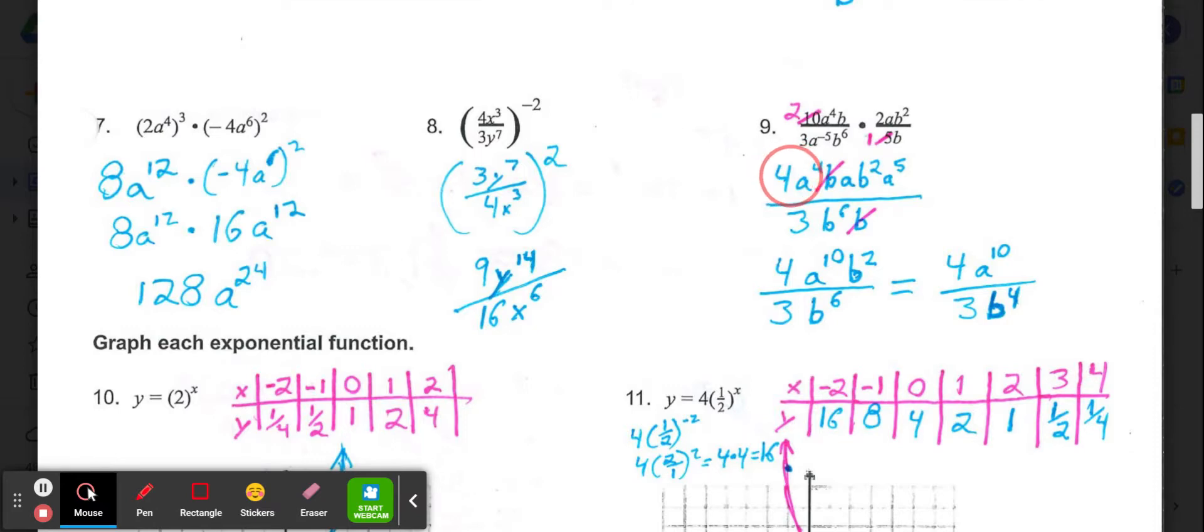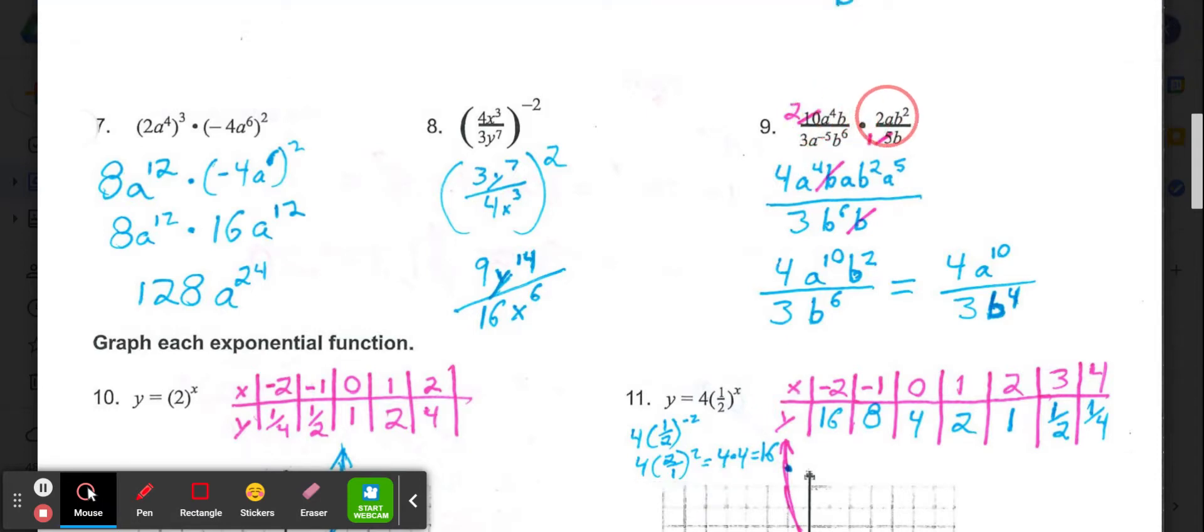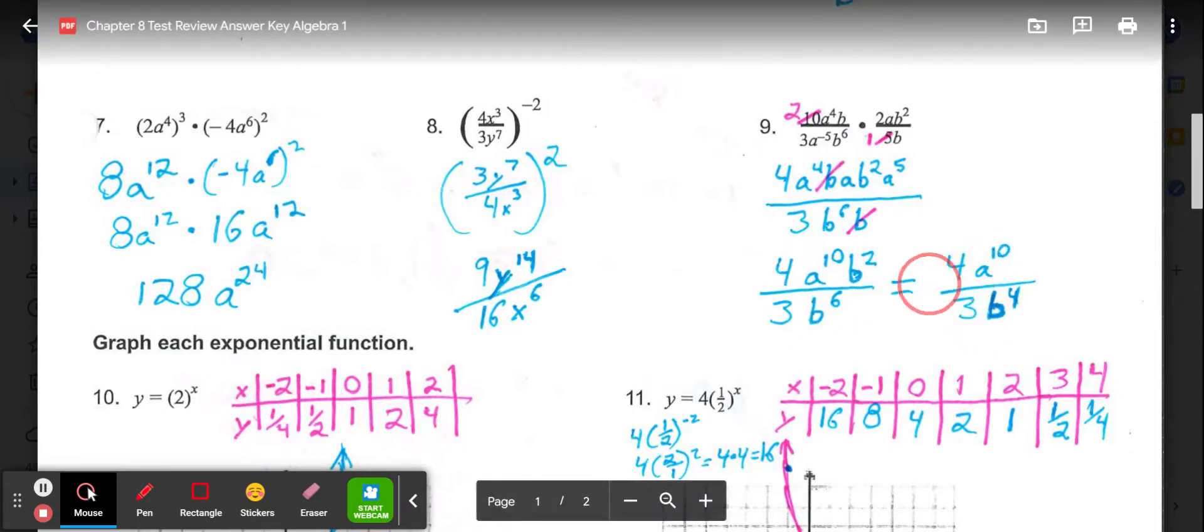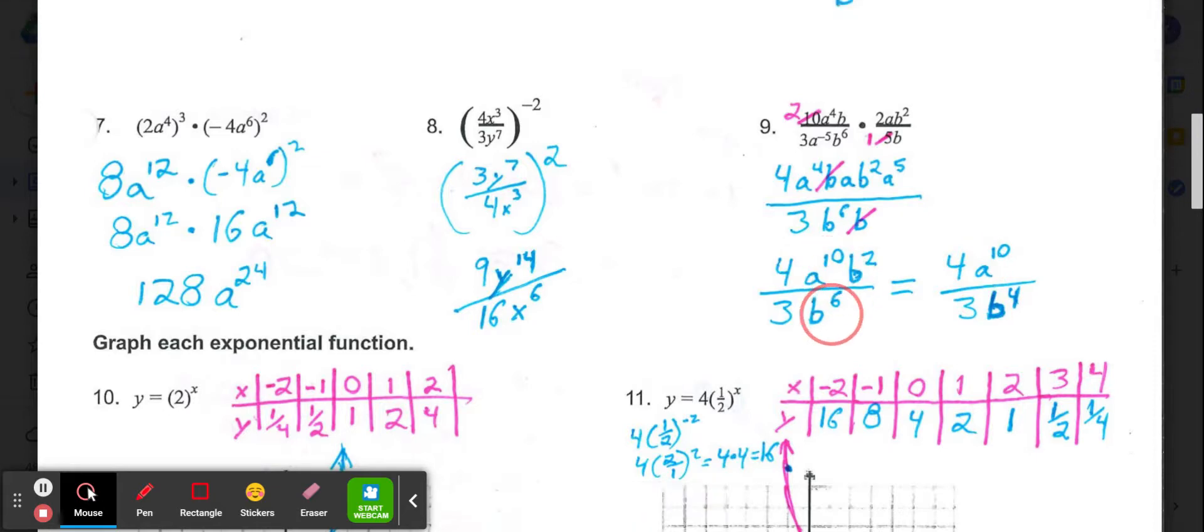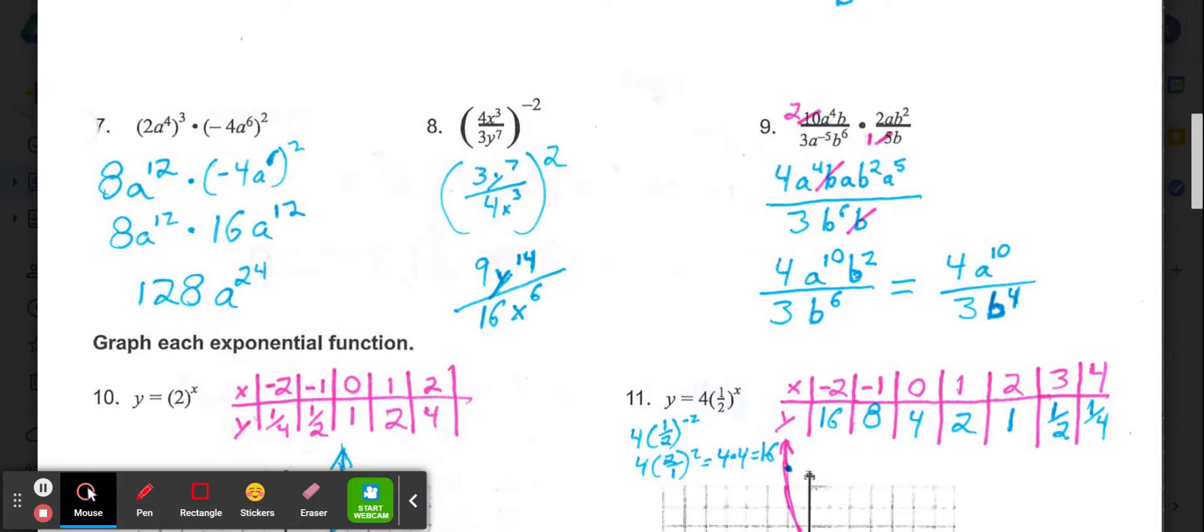Then if I write out my top, I'm left with 2 times 2, which is 4. Then we have the a to the 4th, that b, another a, and a b squared. On bottom I'd have the 3, the a to the negative 5th I'm moving to the top to make a to the 5th. Then we're left with b to the 6th and b. So then I can cancel this b to the 1st and that b to the 1st. And I would have 4a to the 10th b squared over 3b to the 6th. 4 thirds can't be simplified, the a has nothing to simplify with, but b to the 6th on bottom, b squared on top, would leave us with b to the 4th on bottom. So our final answer would be 4a to the 10th over 3b to the 4th.